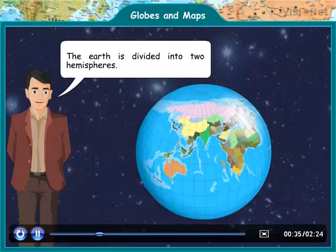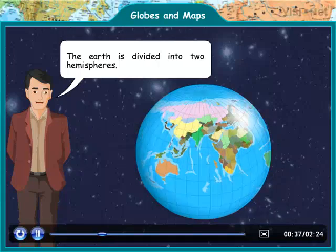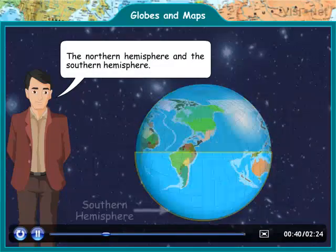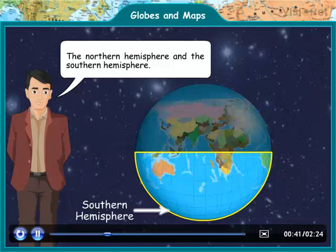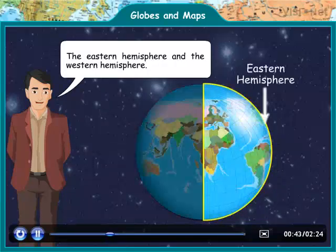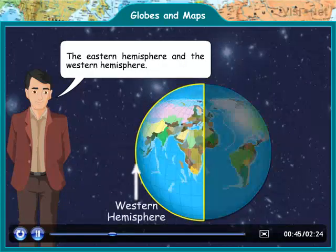The Earth is divided into two hemispheres: the Northern Hemisphere and the Southern Hemisphere, or the Eastern Hemisphere and the Western Hemisphere.